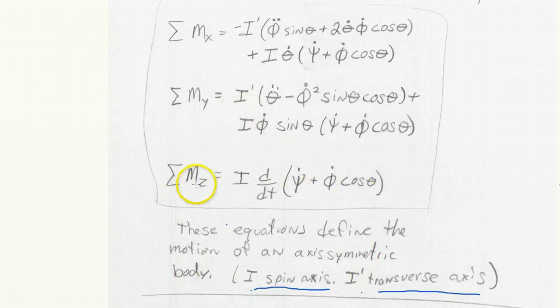And they're all here. You can see the z component's conventionally written as a time derivative of this, which is psi dot plus phi dot cosine theta. And that's the summary for the motion of an axisymmetric body, the rotational motion of an axisymmetric body.